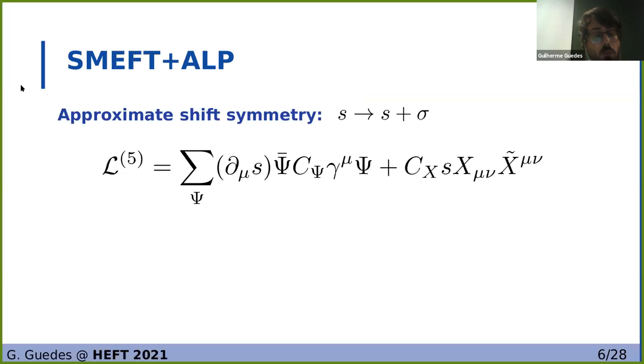This is not the basis that is commonly used in the literature. Usually, in the literature, the basis that is used is one in which shift symmetry of the ALP is explicit, and so the operators take a derivative in the ALP, as we see here, where psi goes over the chiral multiplets, and these shift-psi are Hermitian matrices.